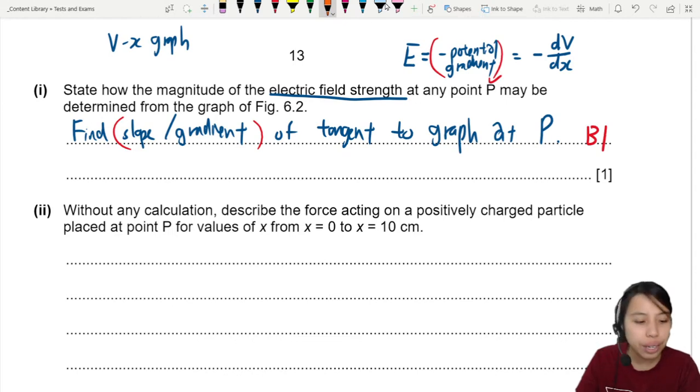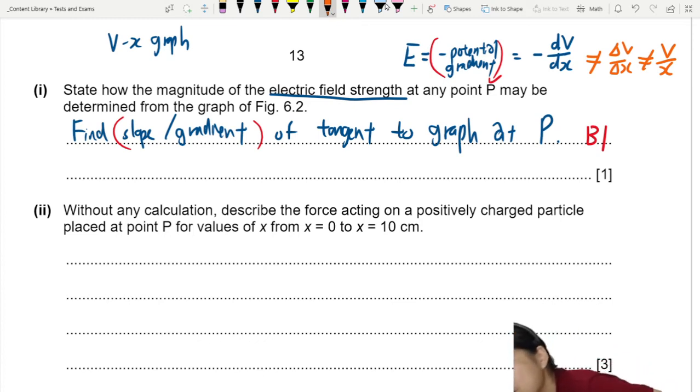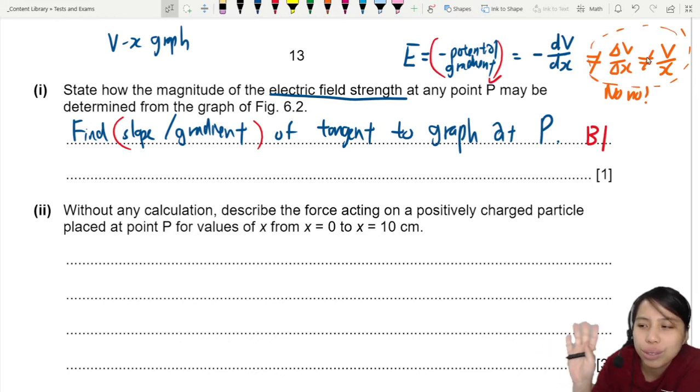There is one warning though. You need to, by the way, potential gradient is also okay. We allow negative dV/dx, but you cannot say delta V over delta x. You cannot say V over x. It's not the same. This is a rate of change. This one is average over change. If it's a straight line graph, then we can use this. So no, no for these two. Mathematically not correct, don't use those.